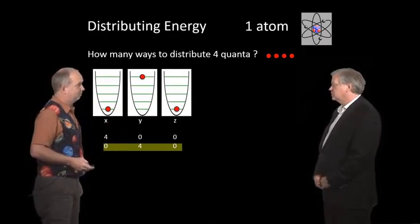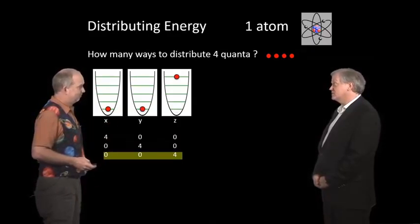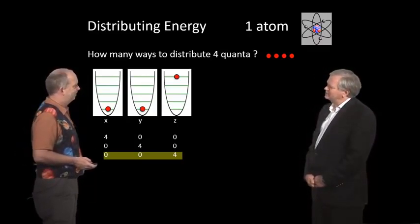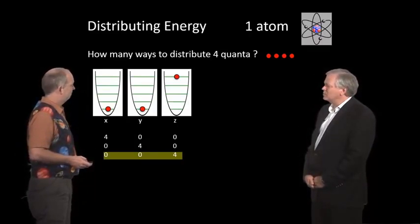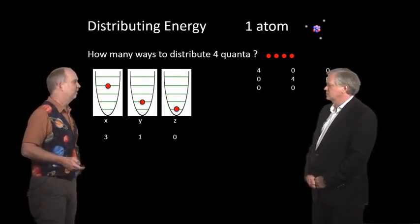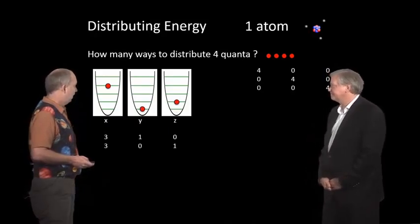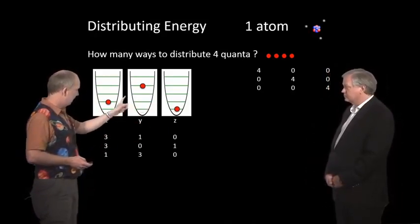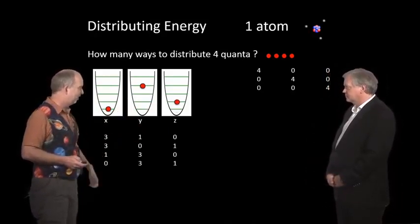Or we could put all the quanta in y. Yep, and one could imagine we could do it all in z as well. Indeed. So that's given us three possibilities, but is that all? Yeah, well then we can start splitting it, so maybe we'll do only part of it in x. Yeah, so let's say we have three in x, one in y, zero in z. Yep. And then we can run the changes on that, three, zero, one, put them here, one, zero. And so we have a lot more possibilities now.